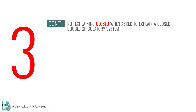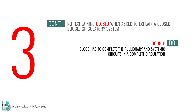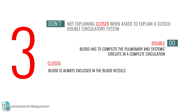Number 3: not explaining 'closed' when asked to explain a closed double circulatory system. Apart from explaining that 'double' means that blood has to complete the pulmonary and systemic circuits in a complete circulation, you should also explain that 'closed' means the blood is always enclosed in the blood vessels.